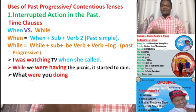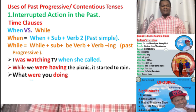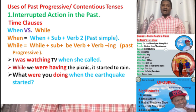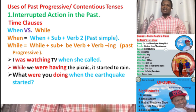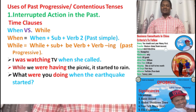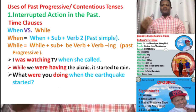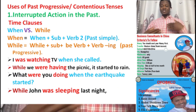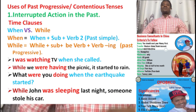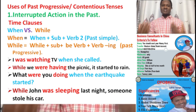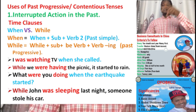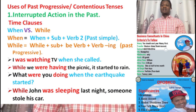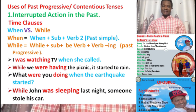Third example: 'What were you doing when the earthquake started?' — the time clause 'when it started' interrupts the action that was going on in the past. Fourth example: 'While John was sleeping last night' — that is the action going on in the past. 'Someone stole his car' is the action that interrupted. So someone stole his car is the action that interrupts, and that is the interrupted action in the past.